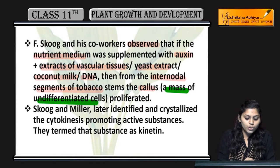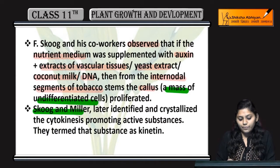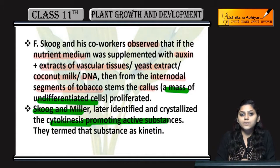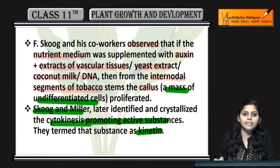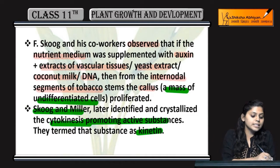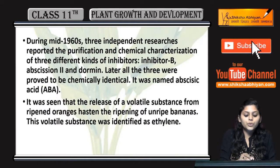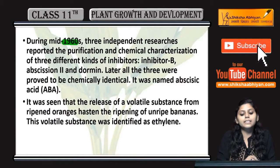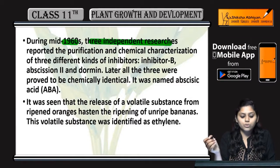Skoog and Miller ne later identify kiya cytokinesis promoting active substance ko. Unhone baad mein isko term di — kinetin. Kinetin kya kar raha tha? Cytokinesis ko promote kar raha tha. During mid-1960s, three independent researches hui.